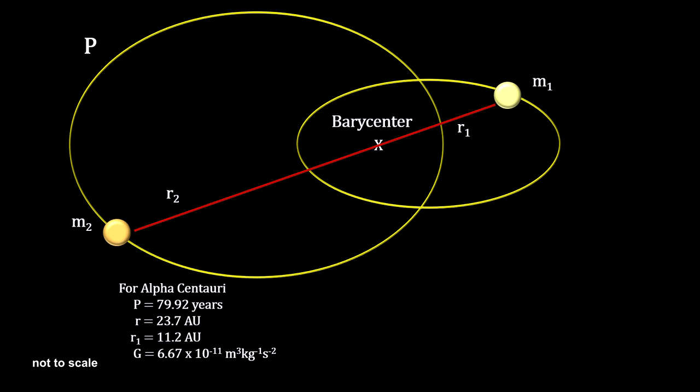Careful observations of Alpha Centauri show that the distance between the two stars is just under 24 times the distance from the Earth to the Sun, with A's distance to the barycenter being a little less than half of that.